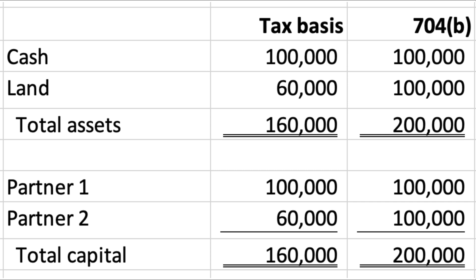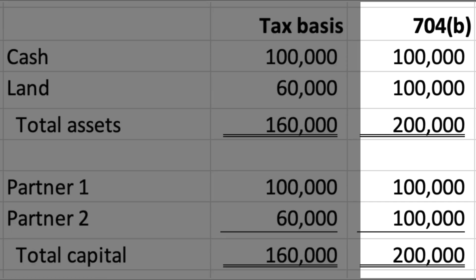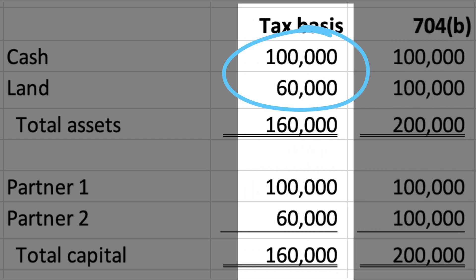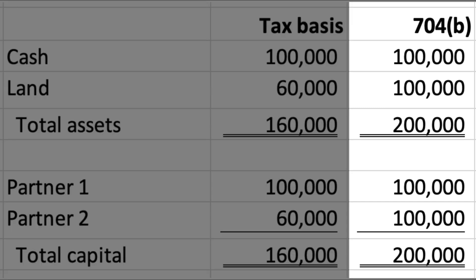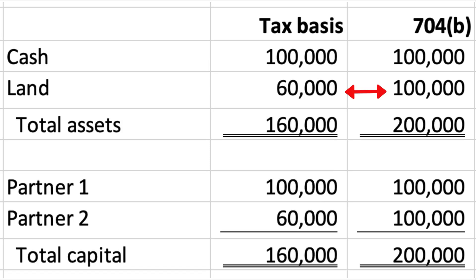The partnership immediately creates two balance sheets. The 704B balance sheet reflects the fair market value of the contributed assets and shows the economic claim of each partner — $100,000 — on the partnership assets. The tax basis balance sheet shows the tax basis of the assets and the partners' tax basis in the partnership assets. In this example there are no liabilities. The difference between the fair market value of the land and the tax basis at the time of contribution introduces Section 704C.